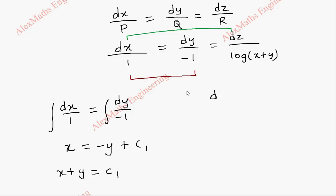In the same way let's take first and last. So we have dx by 1 equal to dz by log of x plus y. We can integrate but this is in terms of x and y.